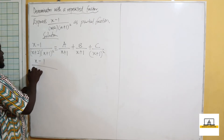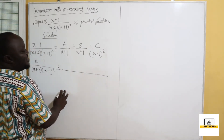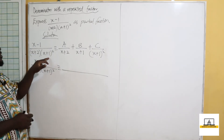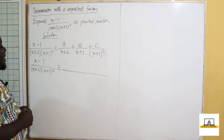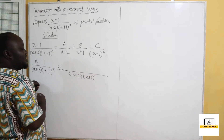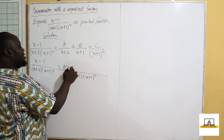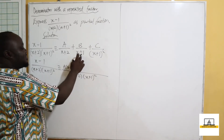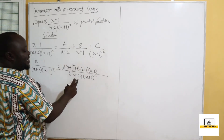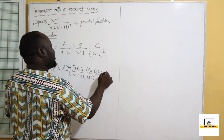We have (x−1) over (x+2)(x+1)², and this is our LCM. So the LCM becomes (x+2)(x+1)². Going in: A times (x+1)², then for B, the LCM goes into (x+2)(x+1)² leaving (x+2)(x+1), and for C, the LCM goes into the squared term leaving (x+2) with one (x+1) remaining — you are left with x+2.